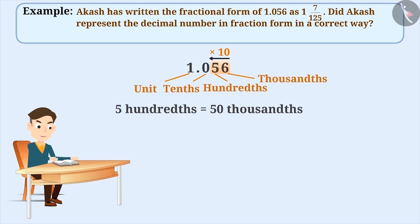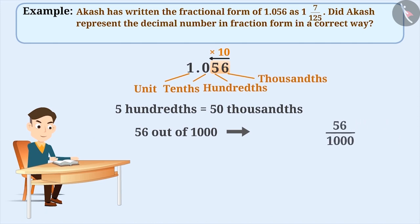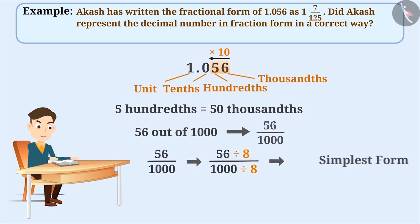So, there are a total of 56 thousandths. For 56 parts out of total 1000 parts of a whole, we can write the fraction as 56 by 1000. If we divide the numerator and denominator by 8, we will get the simplest form of this fraction, which is 7 by 125.